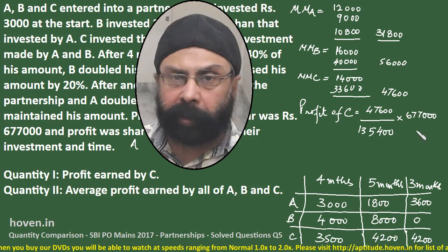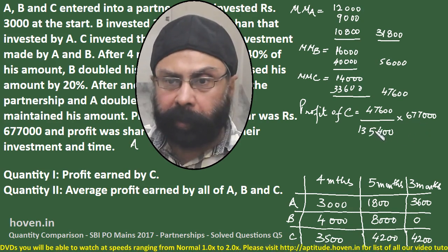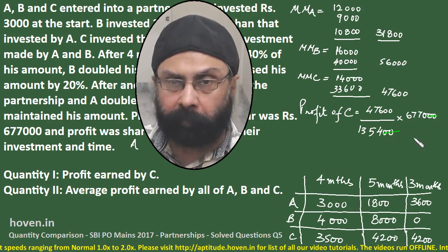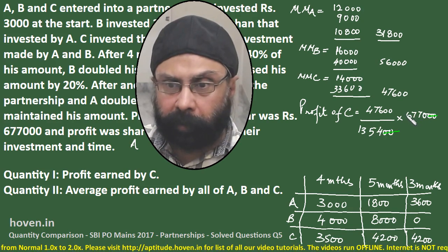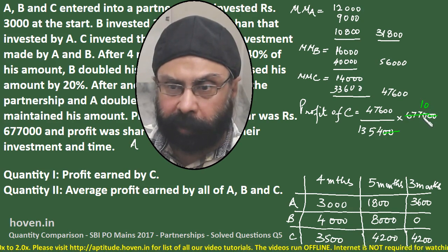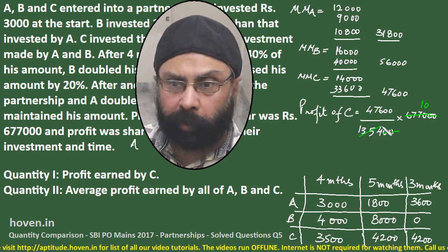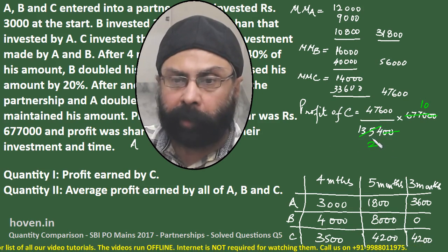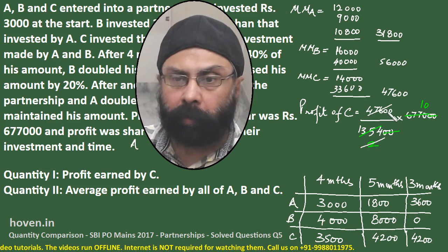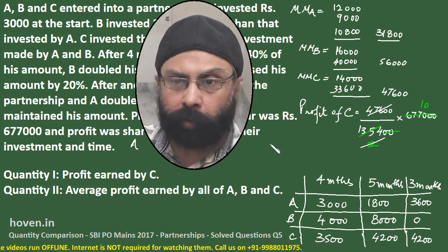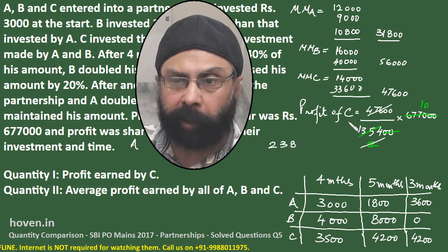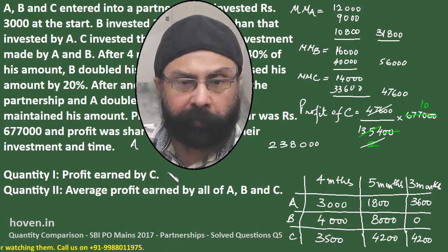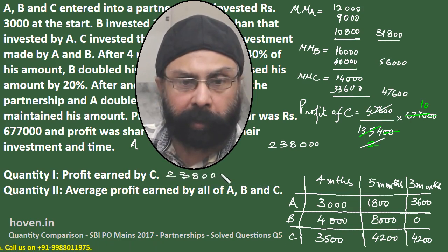We can perform cancellations. The two zeros cancel out directly. Then 677 multiplied through with the remaining terms gives us a result. After simplification, this comes to 238000.